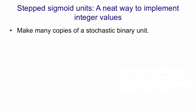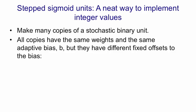I'm going to introduce stepped sigmoid units. The idea is we make many copies of each stochastic binary hidden unit. All the copies have the same weights and the same bias that's learned, b. But in addition to that adaptive bias, b, they have a fixed offset to the bias. The first unit has an offset of minus 0.5. The second unit has an offset of minus 1.5. The third one has an offset of minus 2.5, and so on.